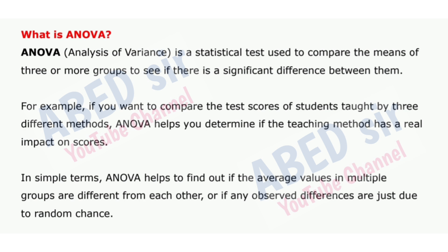ANOVA (Analysis of Variance) is a statistical test used to compare the means of three or more groups to see if there is a significant difference between them. For example, if you want to compare the test scores of students taught by three different methods, ANOVA helps you determine if the teaching method has a real impact on scores. In simple terms, ANOVA helps find out if the average values in multiple groups are different from each other, or if any observed differences are just due to random chance.